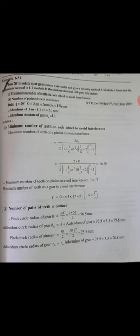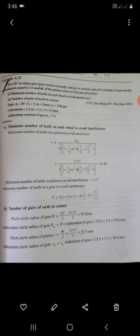So minimum number of teeth on the pinion, T, to avoid interference is T equals 2A divided by G into square root of 1 plus 1 by G sine squared phi, 1 by G plus 2, minus 1. So from the values we have 16.48, so we can round it to 17.